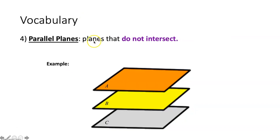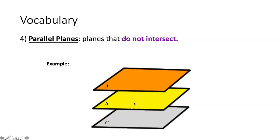Next we have parallel planes — those are planes that do not intersect. We have planes A, B, and C, each parallel to one another, meaning none of them crosses through or intersects another. They are exactly in line with one another, therefore they are parallel planes.